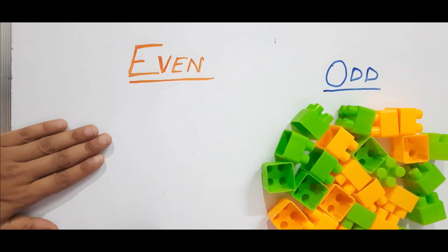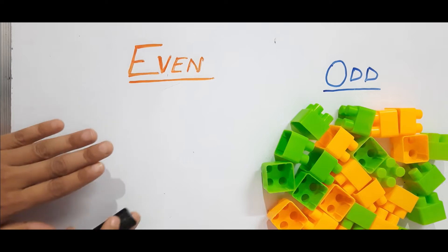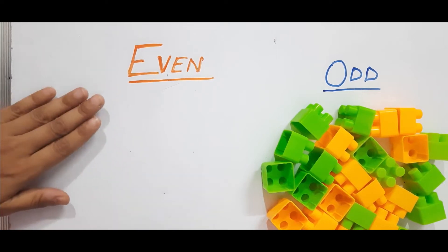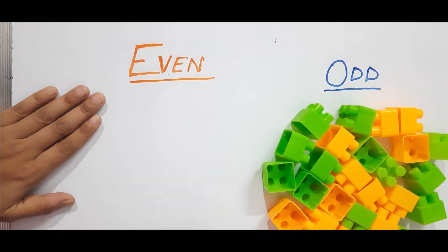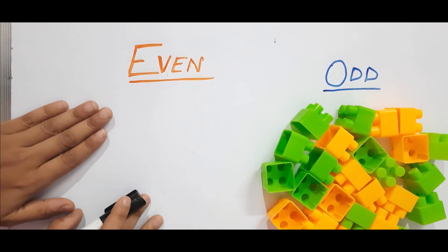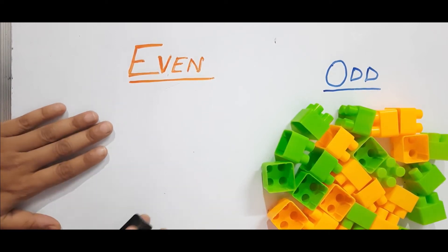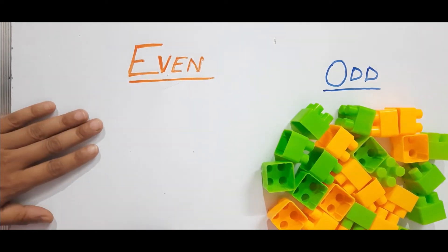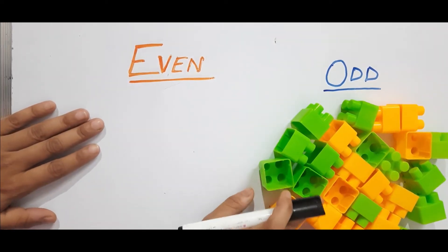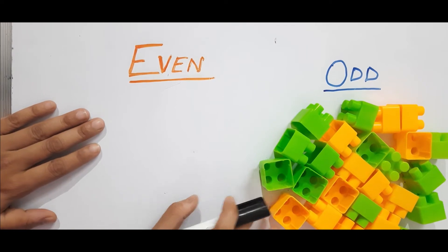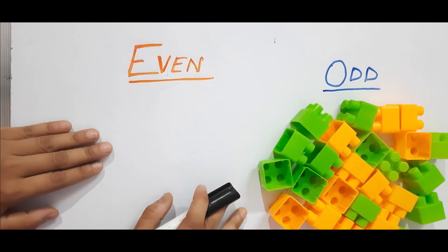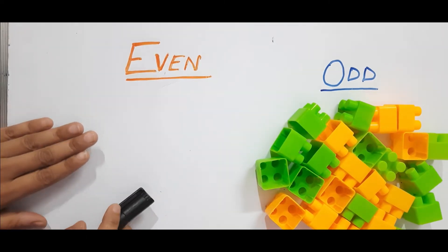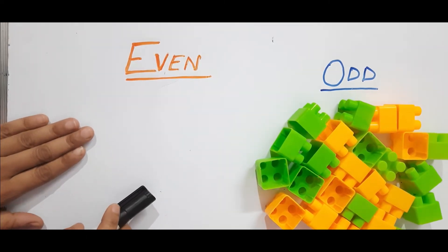Now I'm going to explain to my kid the even and odd concept in a practical way first. If you are introducing your kid to the even and odd number concept, always go the practical way first because kids always learn practical ways faster than the written way. I'm going to use some toys for this. As you can see I have some blocks here — you can use any of your favorite kids' toys.